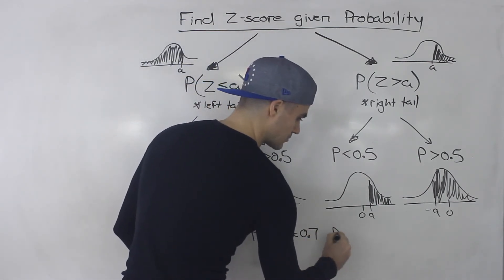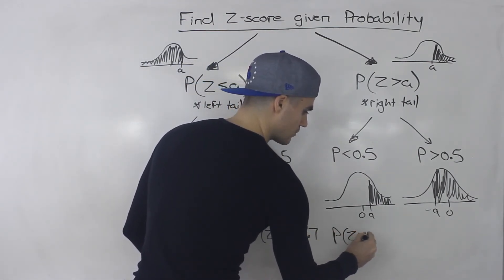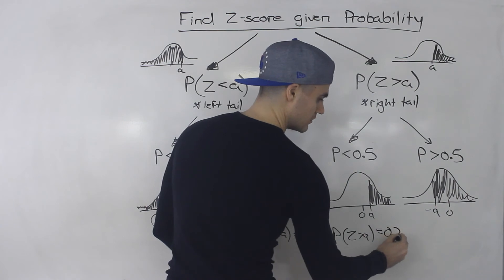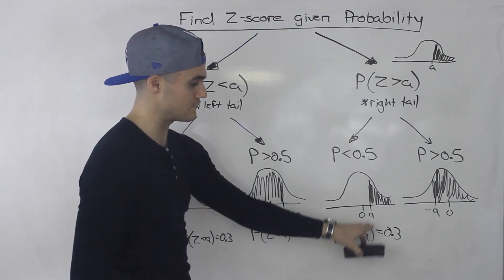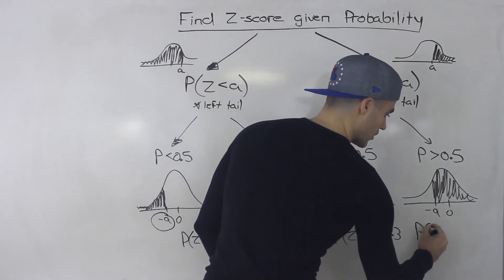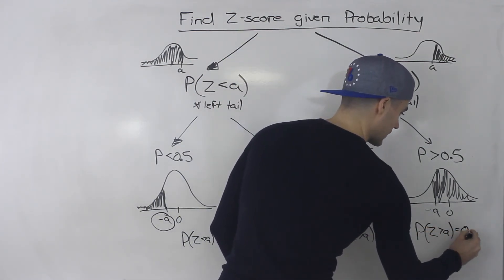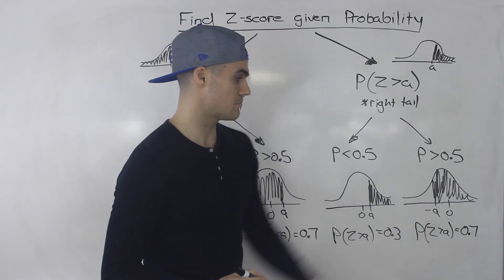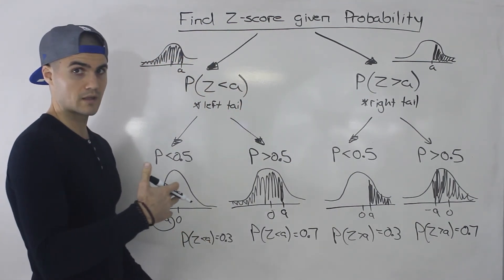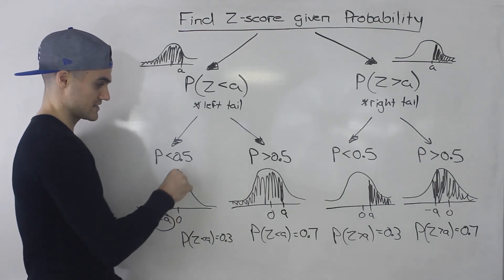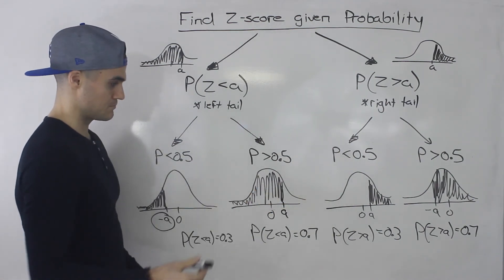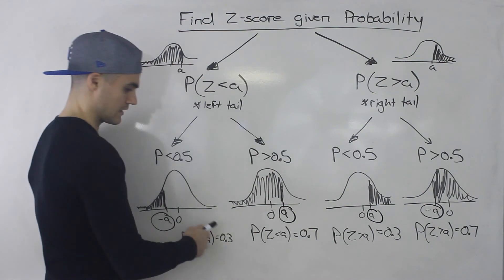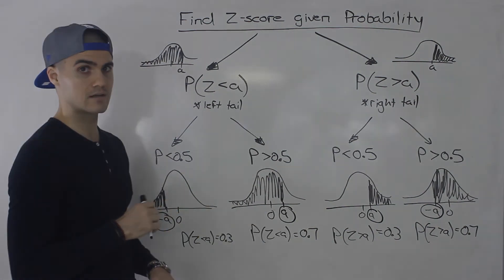For example, if the probability that Z is greater than A equals 0.3, the probability is less than 0.5, so A is positive. Whereas if the probability that Z is greater than A equals 0.7, then A is negative. In the next few examples, I'm going to go over one example for each of these scenarios — how to solve for these Z-scores given these probabilities using a table and a calculator.